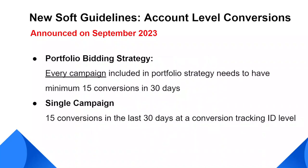You should note that the new guideline of 15 conversions at the account-level conversion action works only at the single campaign level. In many cases, you might use a portfolio bidding strategy across multiple campaigns. In that case, every single campaign in the portfolio strategy needs to have a minimum of 15 conversions in the past 30 days for you to use target ROAS. For example, if you have two campaigns using a shared portfolio bidding strategy, Google recommends that each campaign in the portfolio should have 15 conversions on their own before you switch to target ROAS.